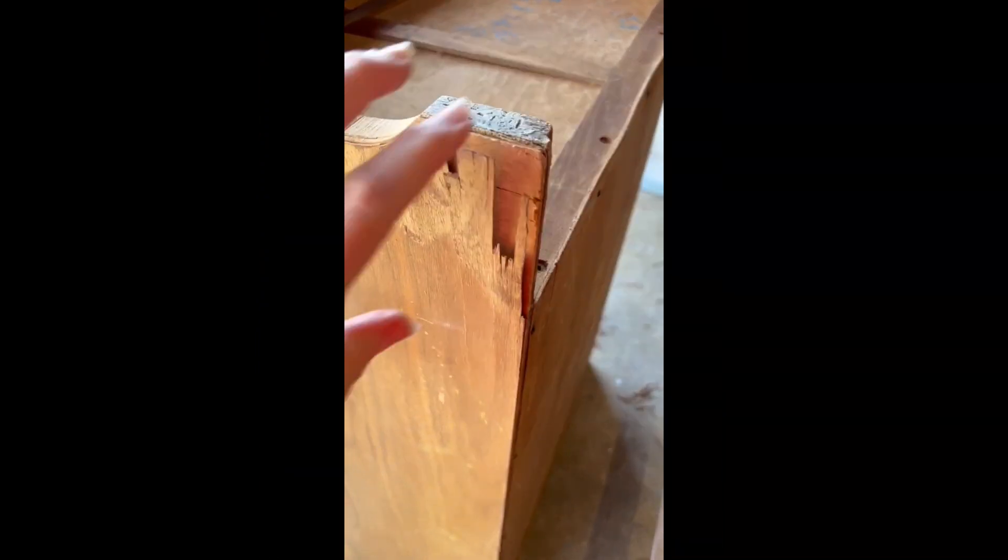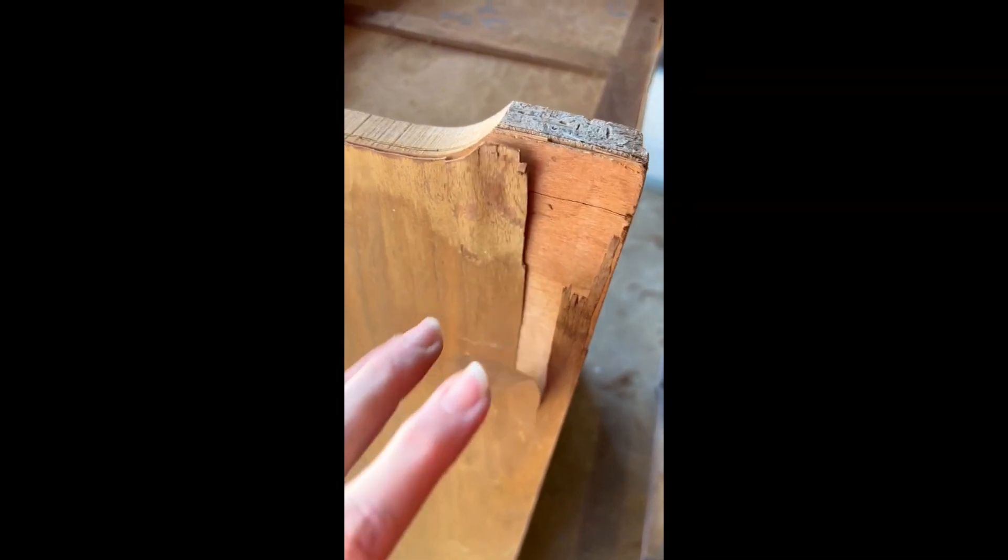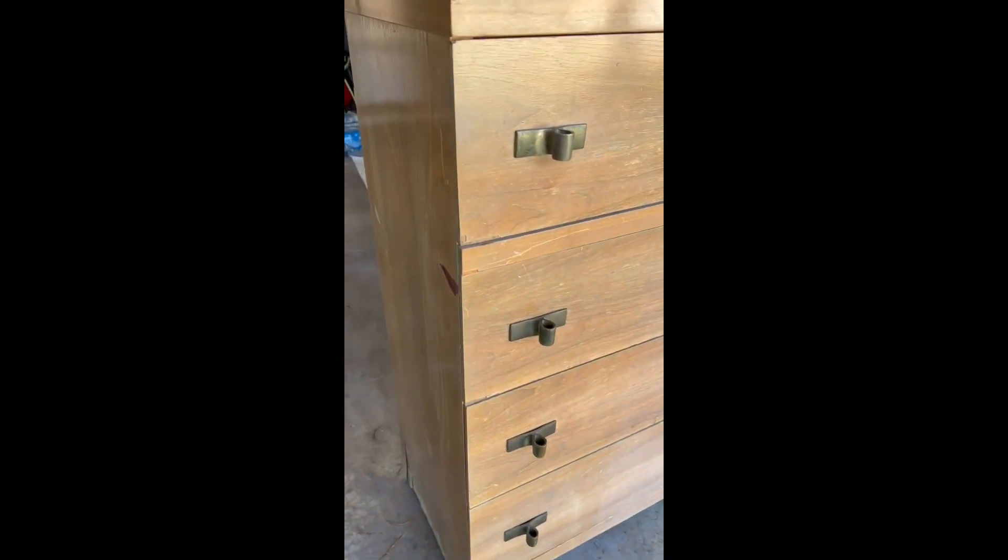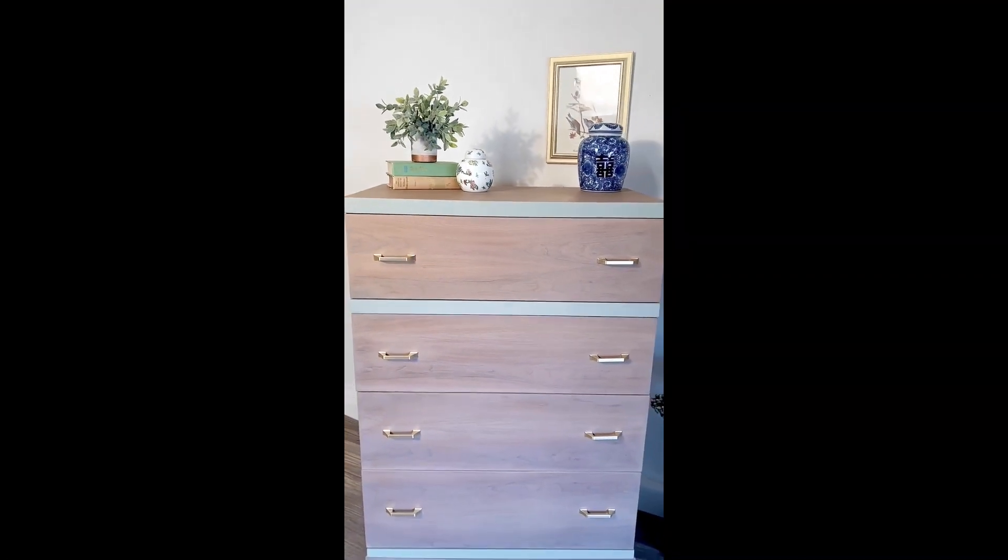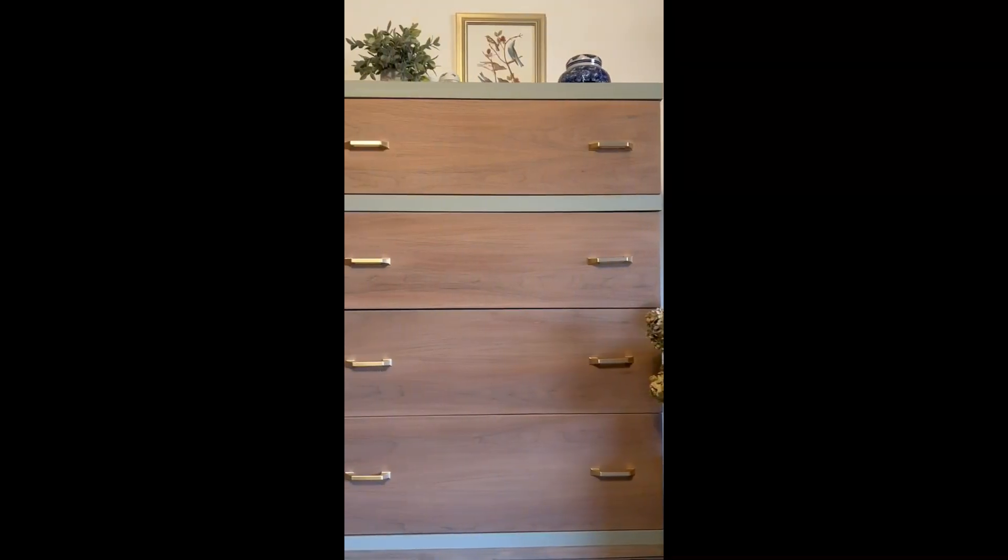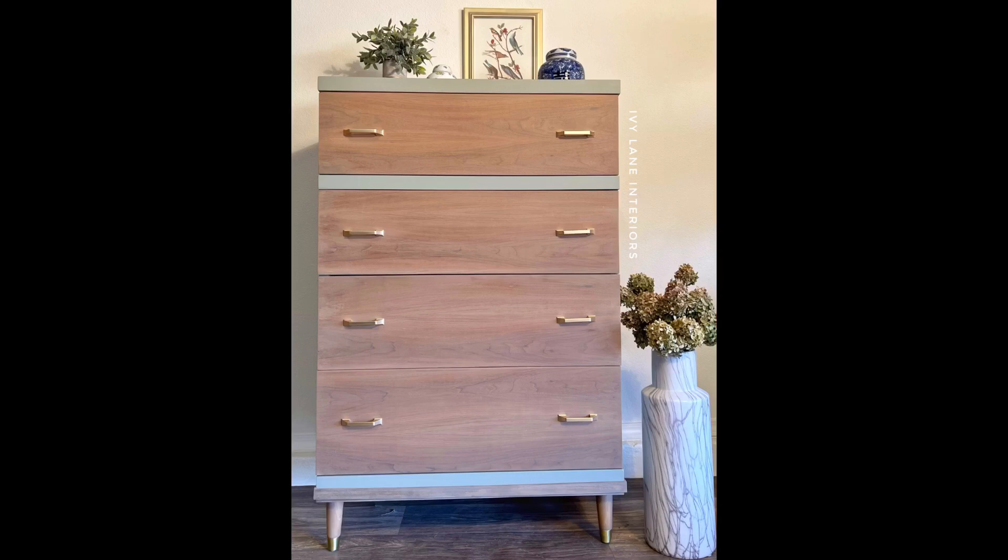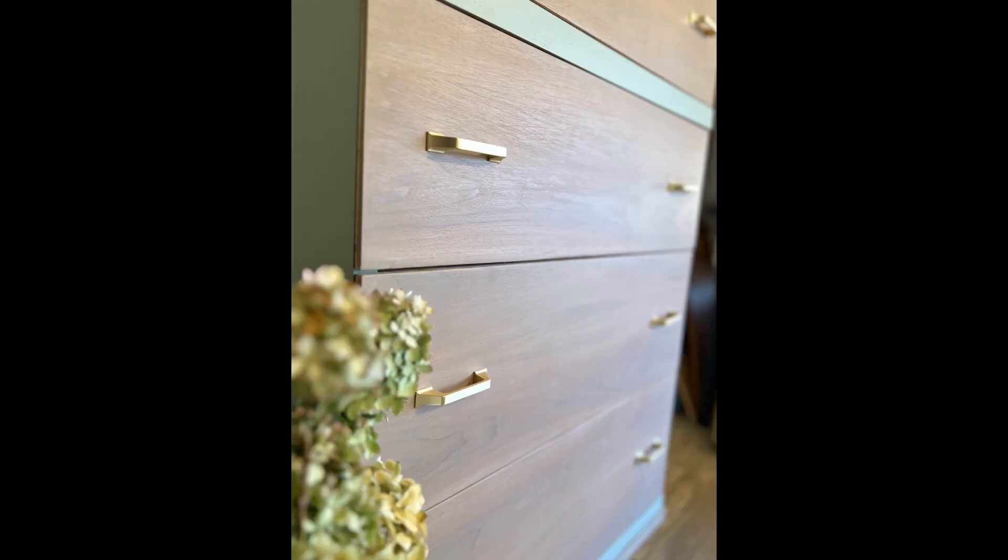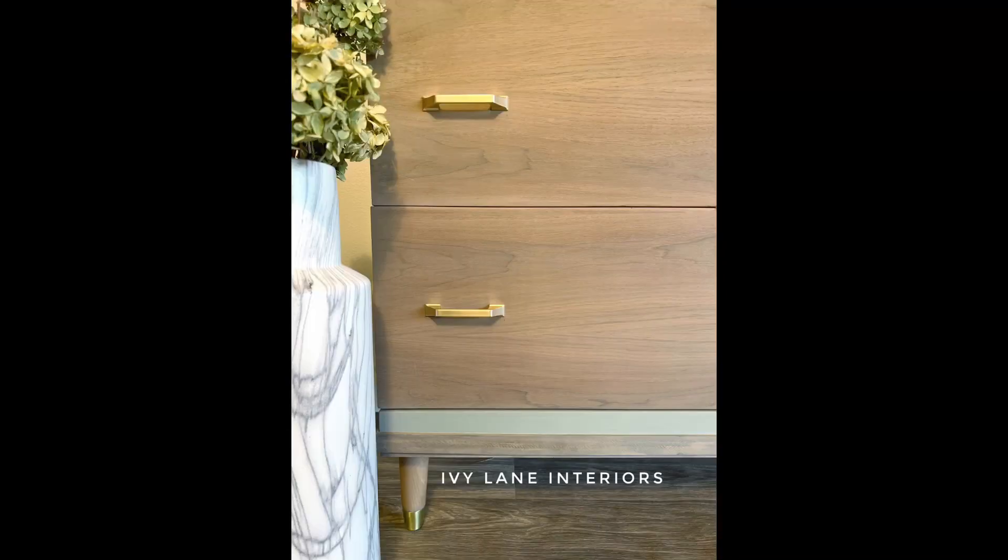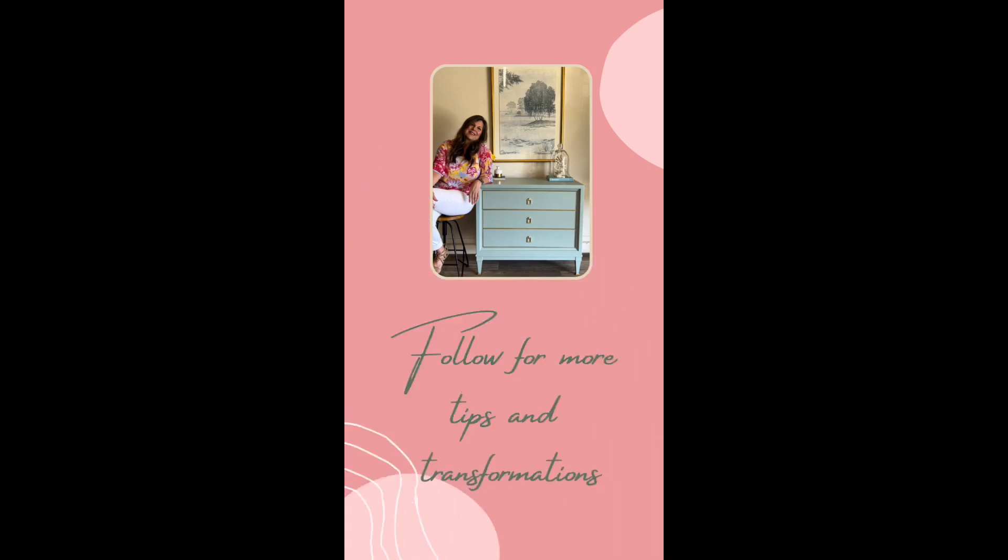So let's take a look back at where we started—all of that veneer damage and the old hardware and just really sad little dresser. And here we are now. Beautiful. Wood grain was able to save, brand new hardware, brand new base, brand new legs. And I think it turned out really good. So tell me what you think. Subscribe and like. Thanks so much for watching.